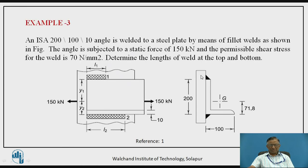This is another example of an angle. An asymmetric section is considered here — an angle subjected to parallel welds having lengths L1 and L2 as shown in the figure. The size of the angle is 200 mm height, 100 mm width, and 10 mm thickness. The total force acting is 150 kN, passing through the CG of the weld section, and the permissible shear stress is 70 N/mm². We have to determine lengths L1 and L2 at the top and bottom.